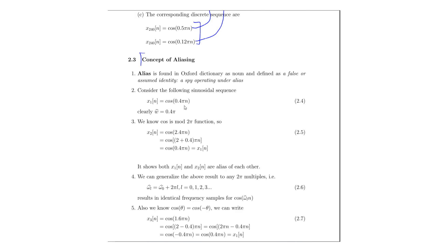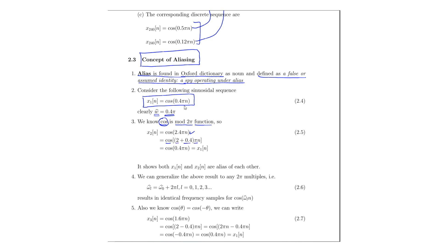Next we discuss the concept of aliasing. Alias is defined in the Oxford Dictionary as a noun meaning a false or assumed identity — a spy operating under an alias. What it basically means in our context: let us consider a sequence x1(n) = cos(0.4πn), where the discrete frequency is 0.4π. As we know, cosine is a 2π-modulus function. So we can write cos(2.4πn) as cos((2 + 0.4π)n). Since the periodicity of 2π comes into play, this expression reduces to cos(0.4πn). So cos(0.4πn) is x1(n), which is actually the same as cos(2.4πn). Both x2(n) and x1(n) are the same and they are aliases of each other, due to the modulus-2π property of cosine.